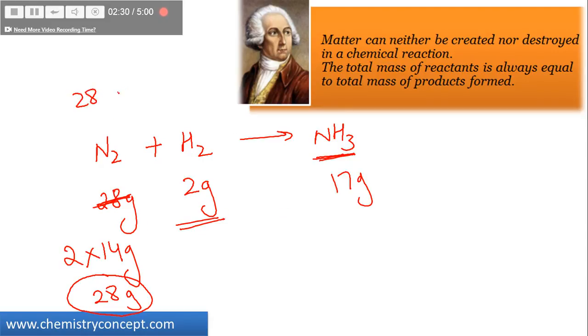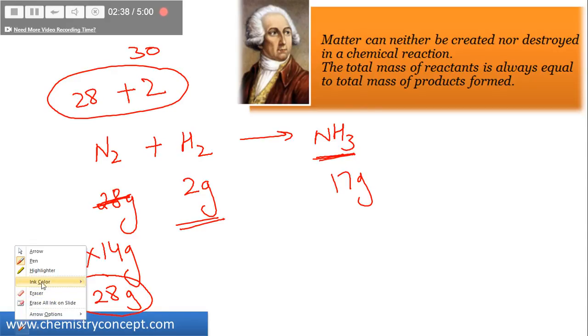Here the total mass of reactant is 28 plus 2, that is 30, but the product formed is 17 grams. Does the equation not satisfy the law of conservation of mass, or is the law not correct? No, actually our equation is not correct. We need to balance it.